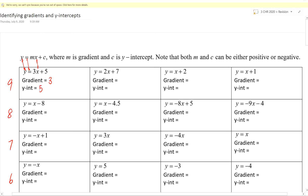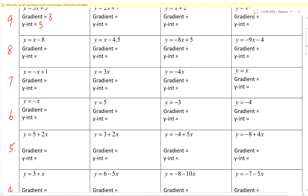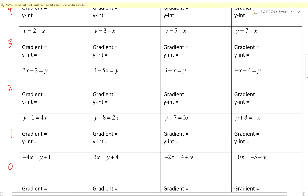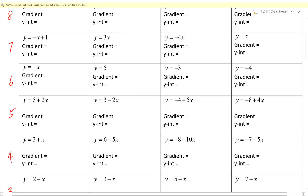Things get a little more different as the questions progress. For example, you may need to rearrange. Over here, y equals 6 minus 5x — it is not exactly y equals mx plus c. But you can switch it around to give y equals negative 5x plus 6, then compare m and c. Also note: y equals 5 has no x, so what is the gradient? I won't give you the answer yet.